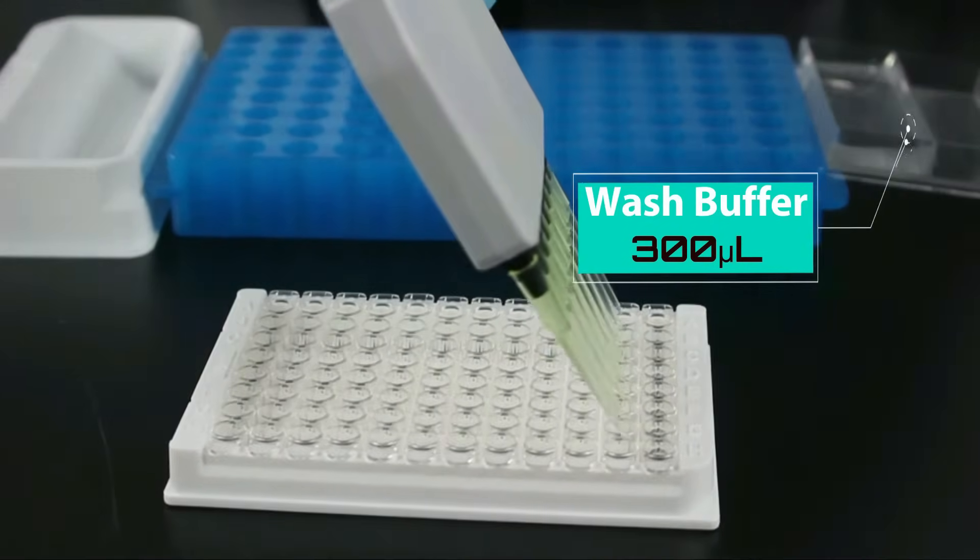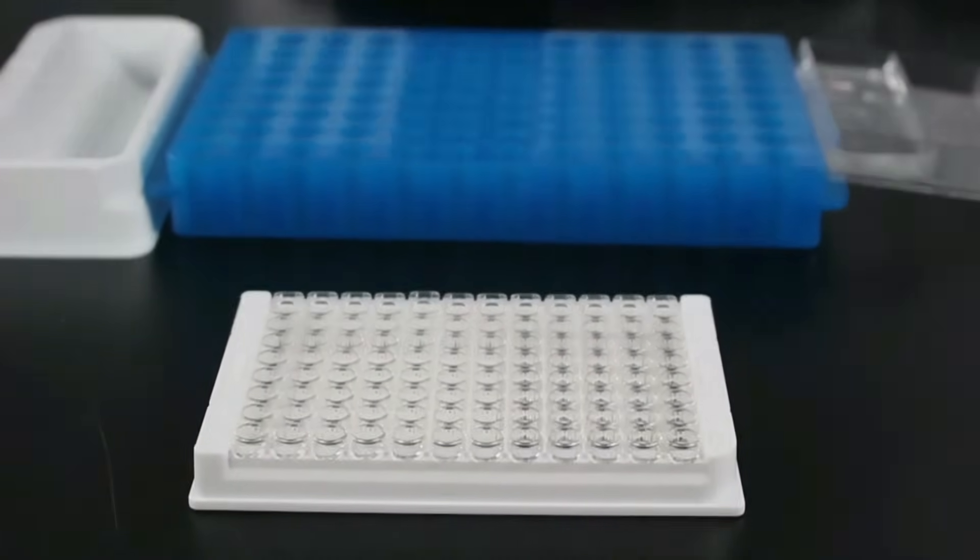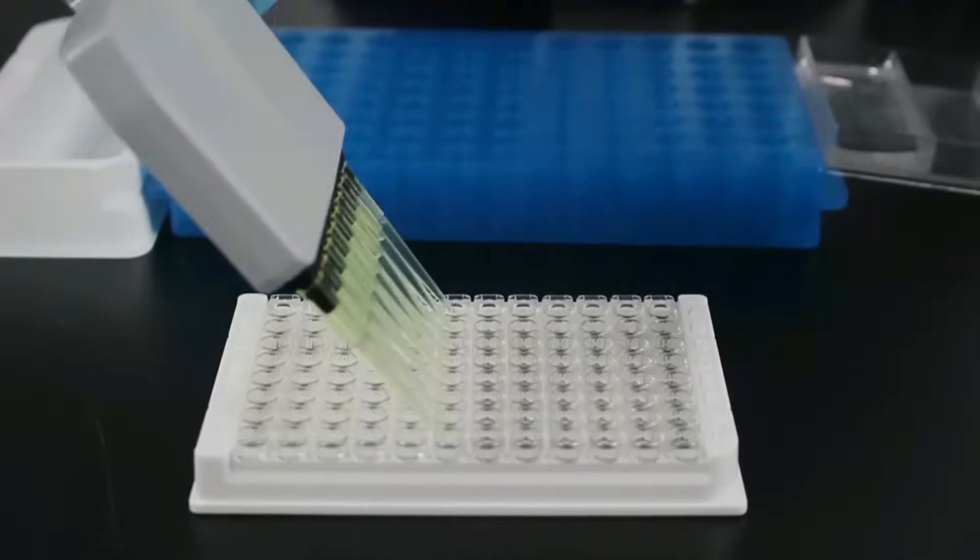Pipette washing is completed by adding 300 microliters of wash buffer to each well. With either wash technique, make sure you remove the excess liquid thoroughly.